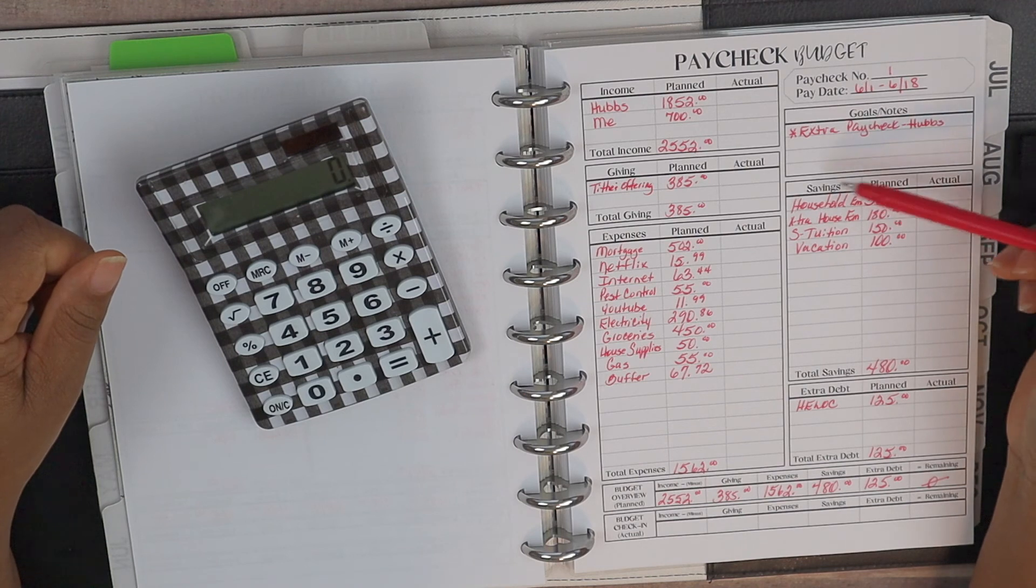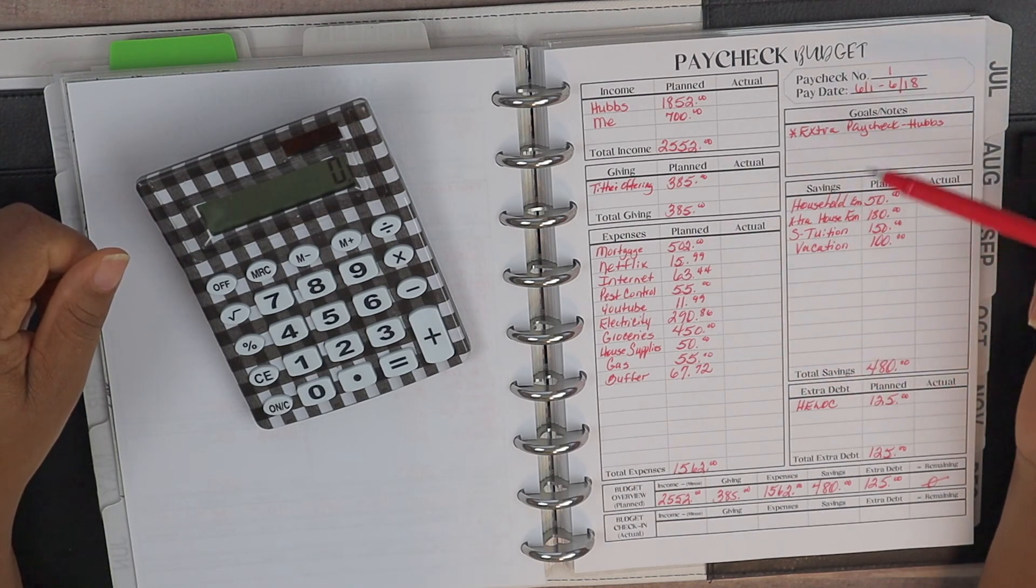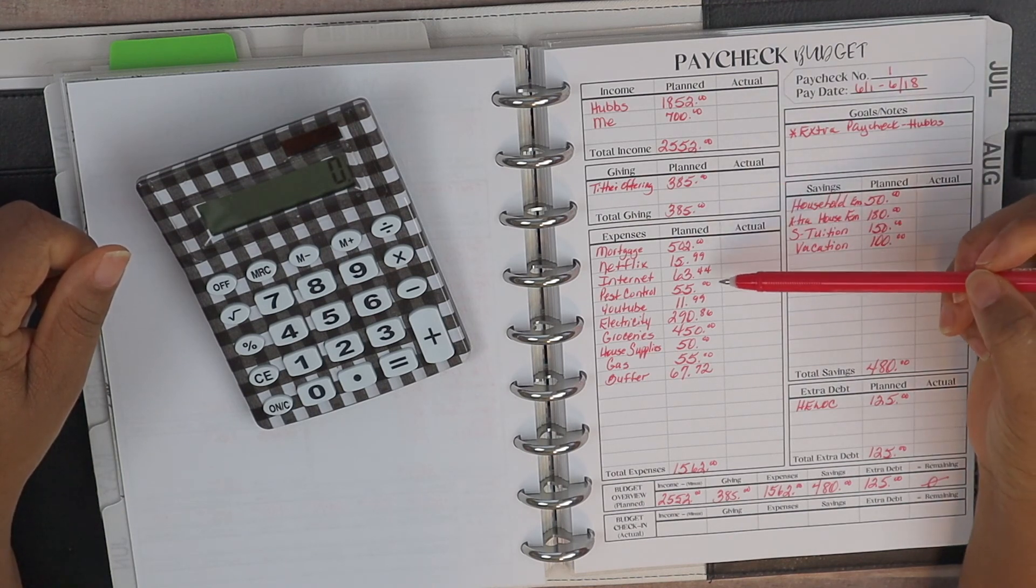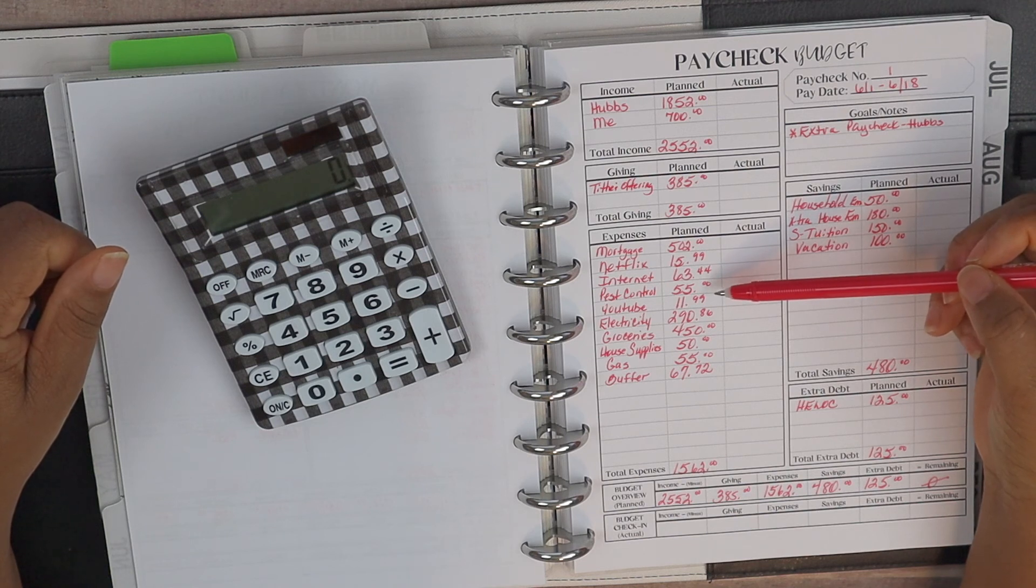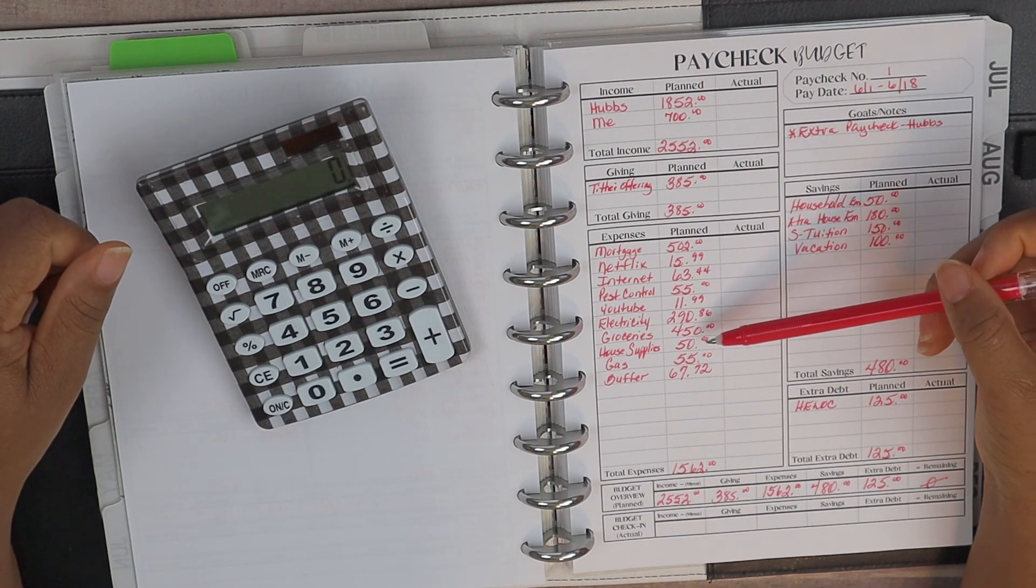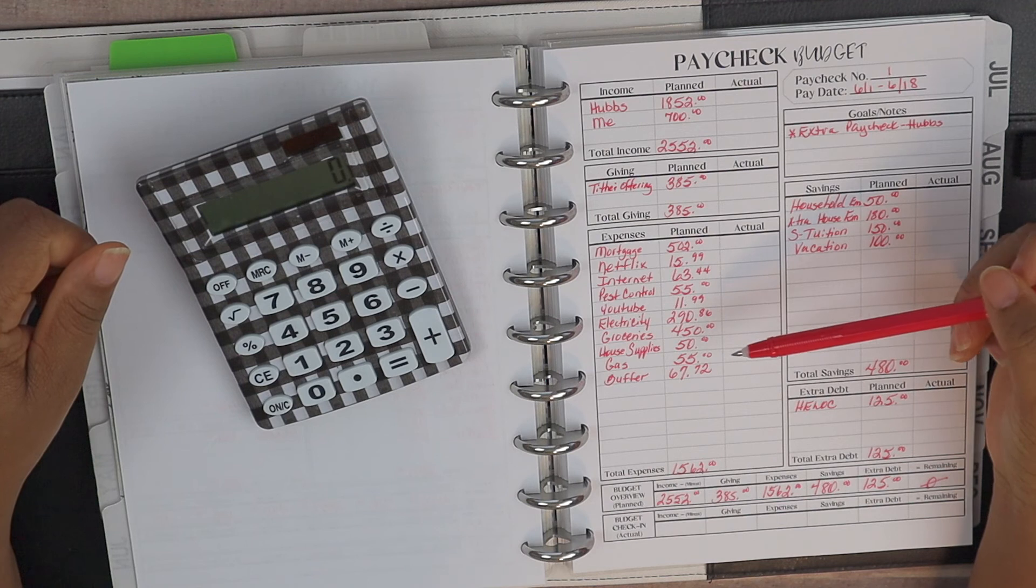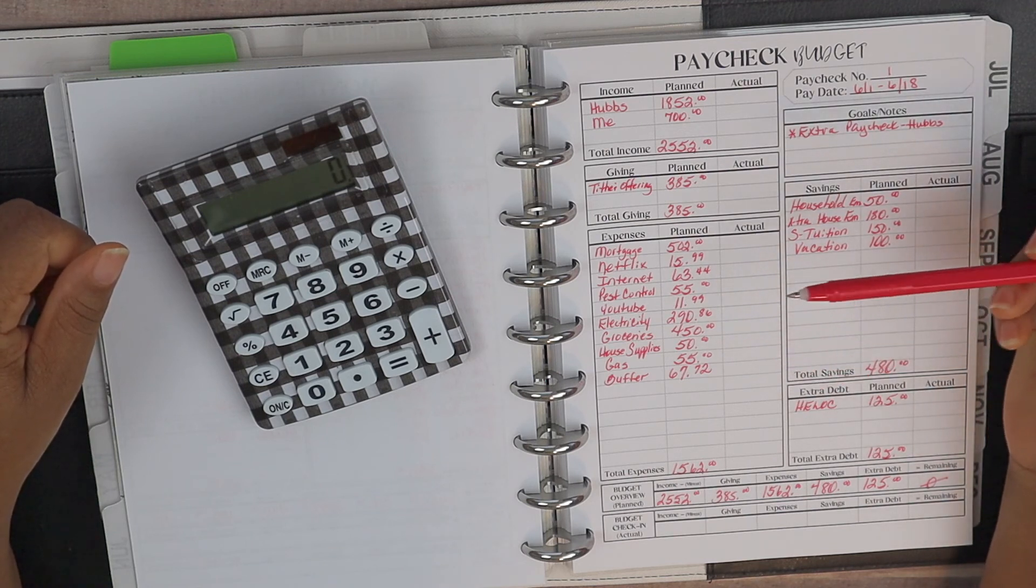And so when we do our paycheck budget number two, you won't see any of the savings or the extra debt. It will just be our expenses. And as far as our expenses, of course, like I said in the monthly budget, our pest control is due. And then of course our groceries. Like I said, we have increased that. So we're just hoping that we can stay under budget again for the month of June.